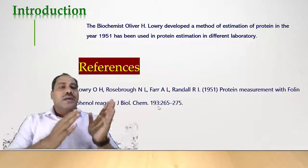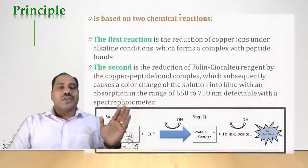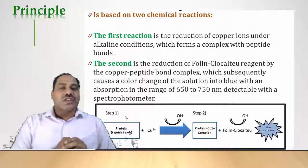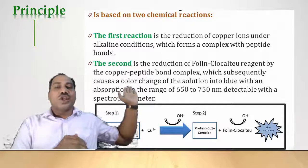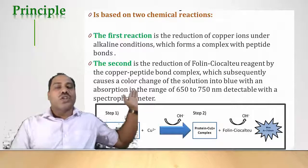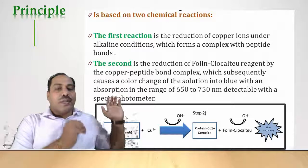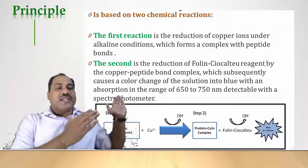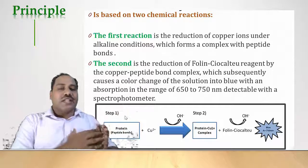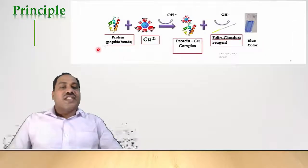Lowry et al. in 1951 reported this method in the Journal of Biological Chemistry. The principle of this method is based on two chemical reactions. The first is the reduction of copper ions under alkaline conditions, which forms a complex with peptide bonds in the proteins. The second is the reduction of the Folin-Ciocalteau reagent by the copper-peptide bonds, which causes a color change to blue with absorption between 650 to 750 nanometers.